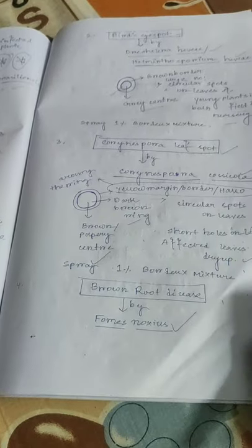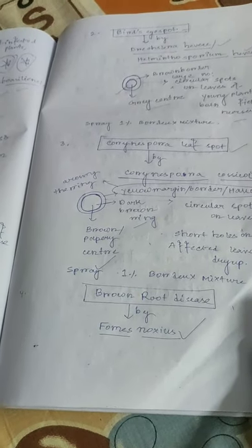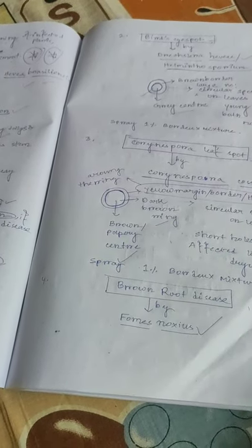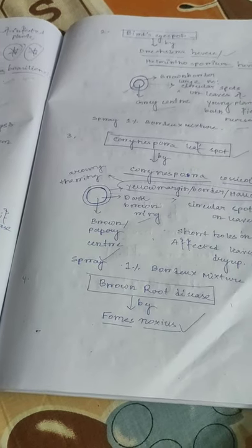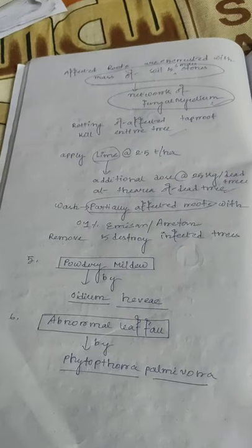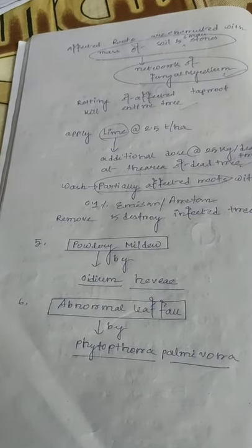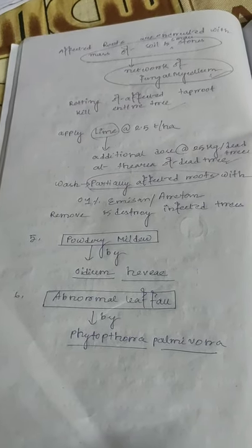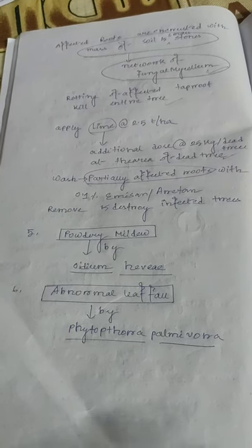The fourth type of disease of rubber is brown root disease, caused by Phellinus noxius. Affected roots are encrusted with a mass of soil and small stones, with a network of fungal mycelium. Rotting of the affected tap root kills the entire tree. Apply lime at 2.5 tons per hectare, with an additional dose of 25 kg per dead tree at the affected area. Wash partially affected roots with 0.1% emulsion or aryton, and remove and destroy infected trees.